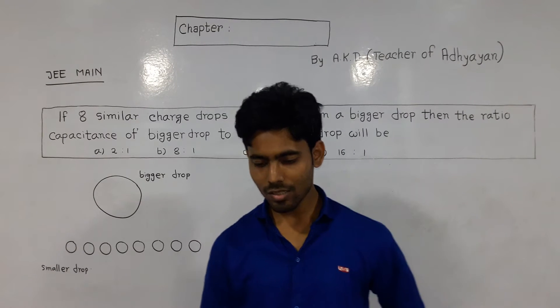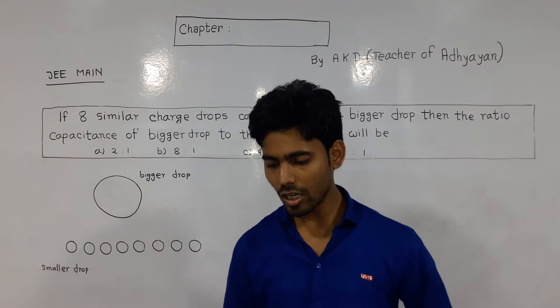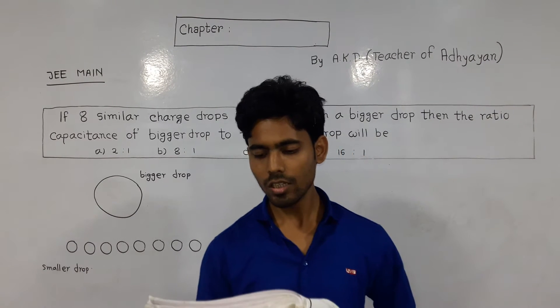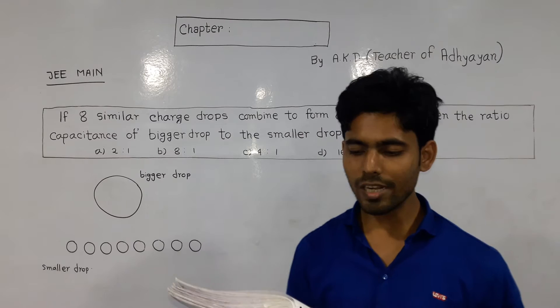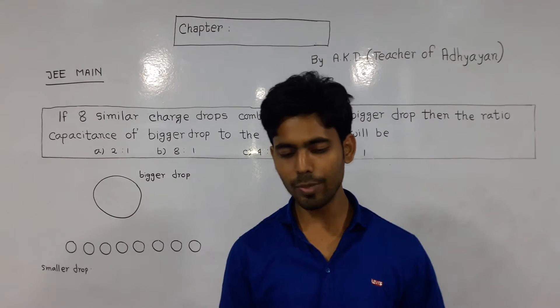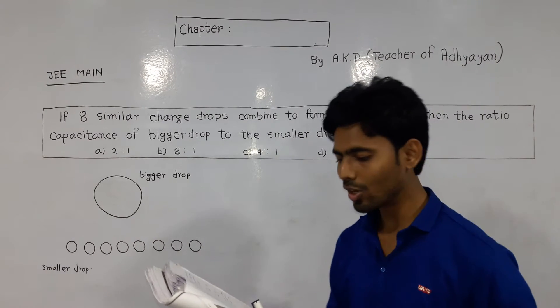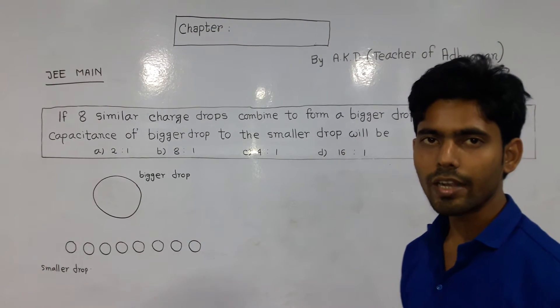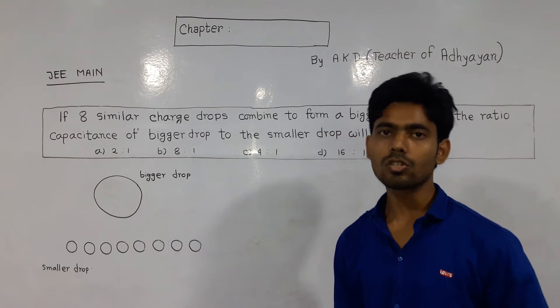Today's problem is: if 8 similar charge drops combine to form a bigger drop, then the ratio capacitance of bigger drop to the smaller drop will be option A: 2 is to 1, option B: 8 is to 1, option C: 4 is to 1, and option D: 16 is to 1.